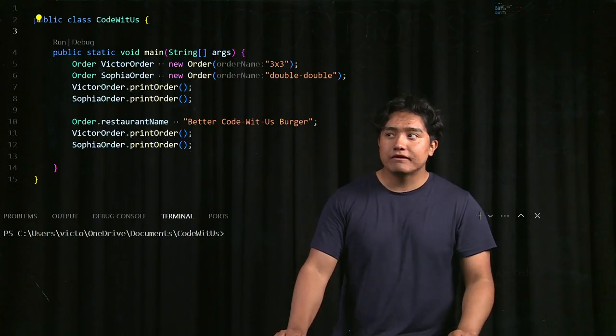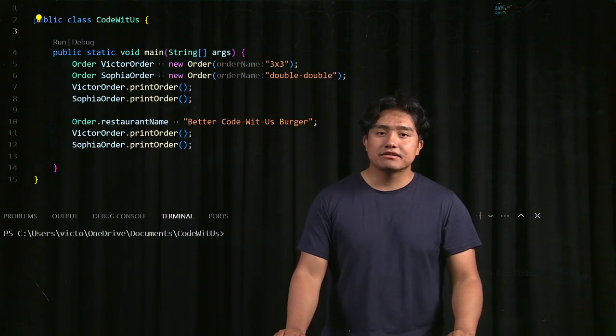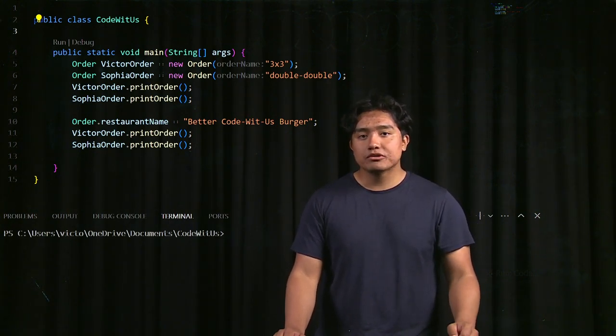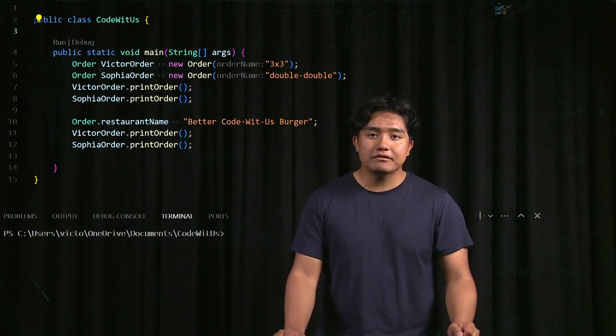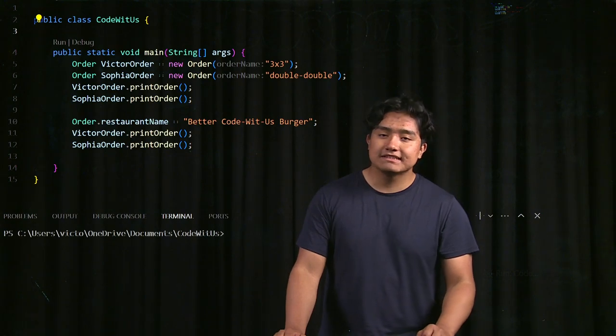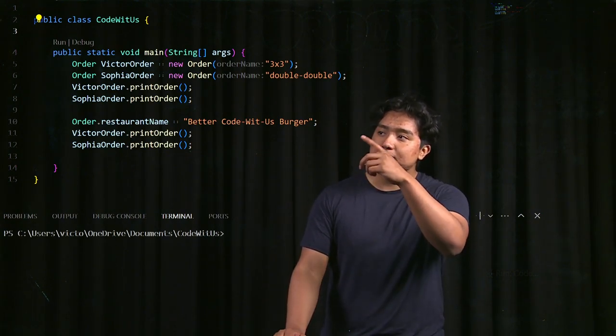So the reason we're in a new file is because typically in Java classes exist in their own files. The order class exists in the order.java file and this codewithus class exists in the codewithus.java file, and this one contains our main method.